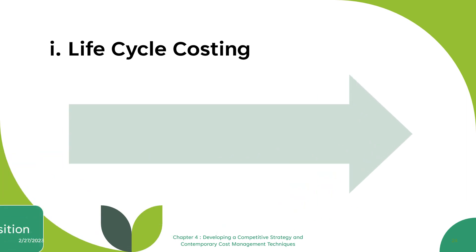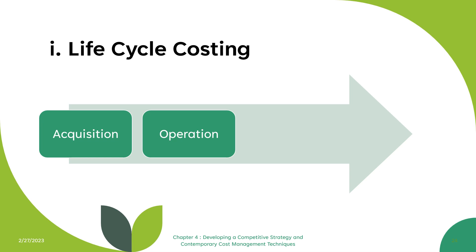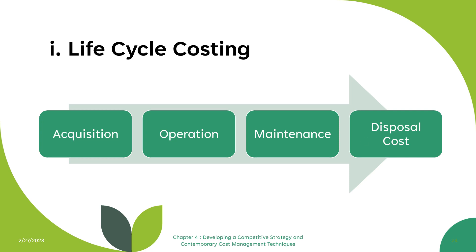Life cycle costing is a method of evaluating the total cost of ownership of a product or asset over its entire life cycle — from initial purchase through disposal or retirement. Costs considered include acquisition cost, operation, maintenance, and disposal cost. Key principles include the total cost of ownership — taking into consideration all costs associated with the product or asset over its entire life cycle — the time value of money, where future costs are discounted to reflect their lower value compared to present costs, and comparison of alternatives.